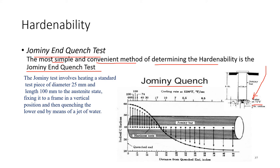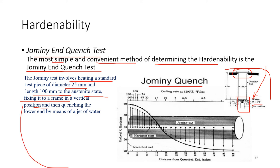The specimen is 4 inches long with a 1-inch diameter, with a holding facility at the tip where water-cooled quenching is applied. The Jominy tester involves heating a standard test piece of 25 mm diameter and 100 mm length to the austenite state, fixing it to a frame in a vertical position, and then quenching the lower end by means of a jet of water.